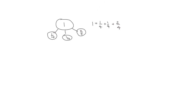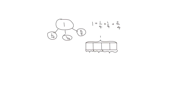We could also draw a tape diagram to show the same thing. We divide the tape into four equal size parts. We'd show that the whole tape is equivalent to 1, and we would have 1 fourth and 1 fourth and 2 fourths, which would show the same decomposition of the number 1.